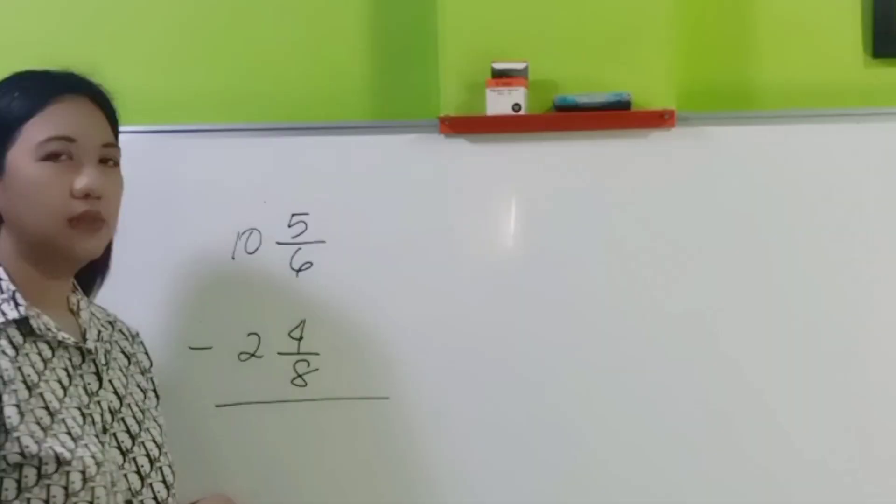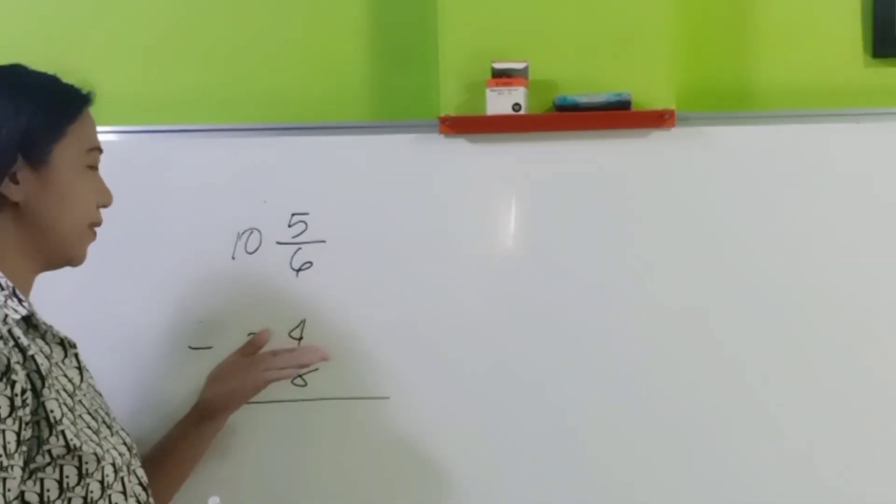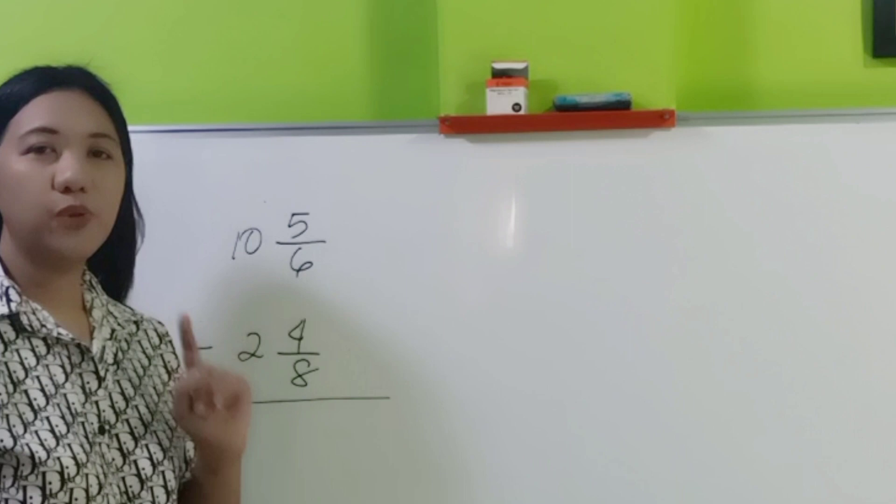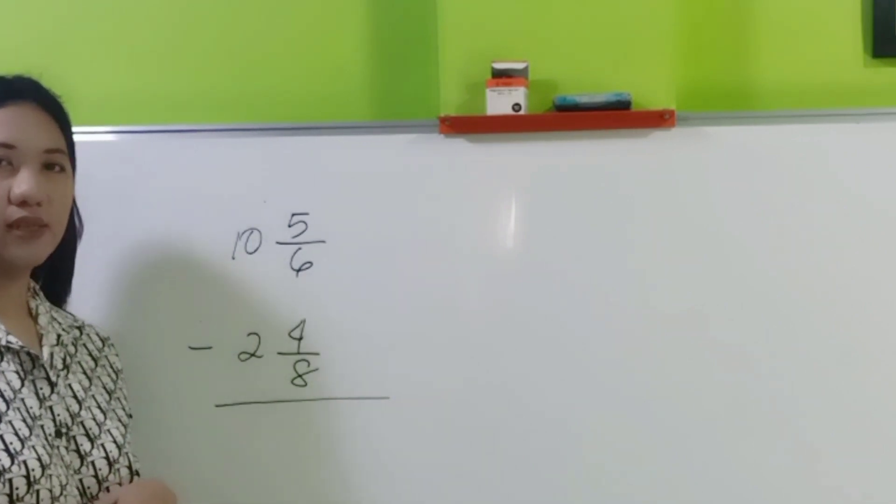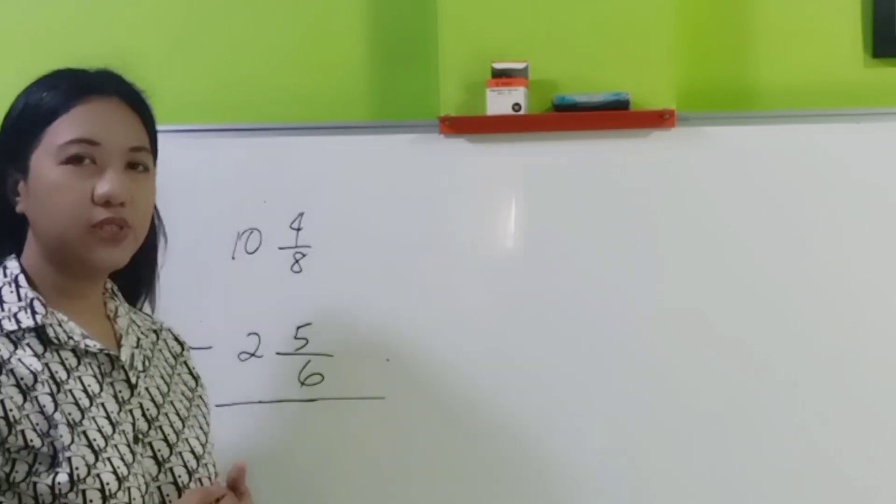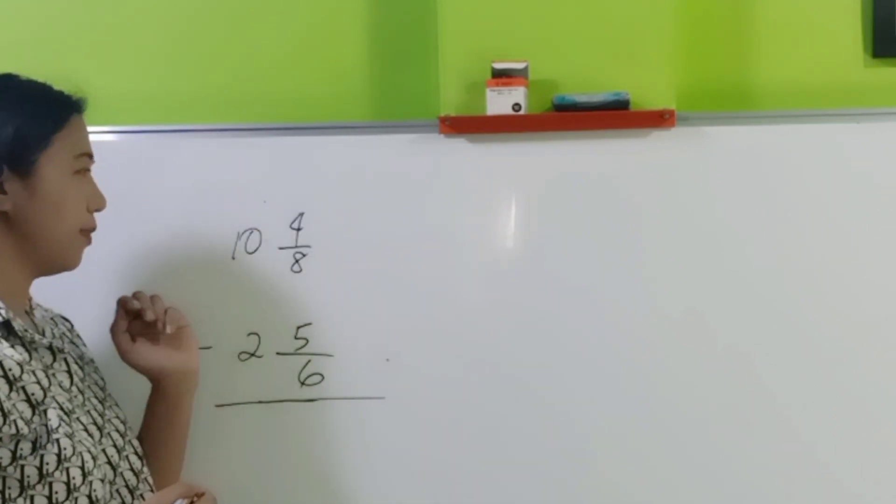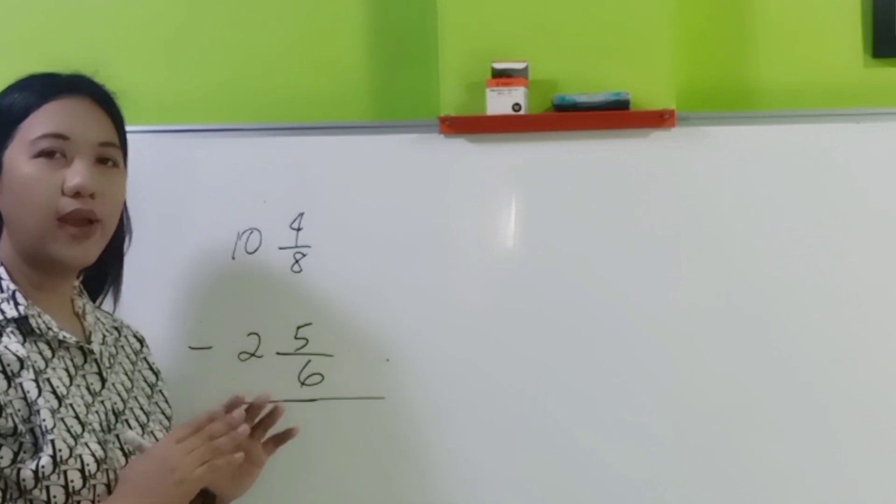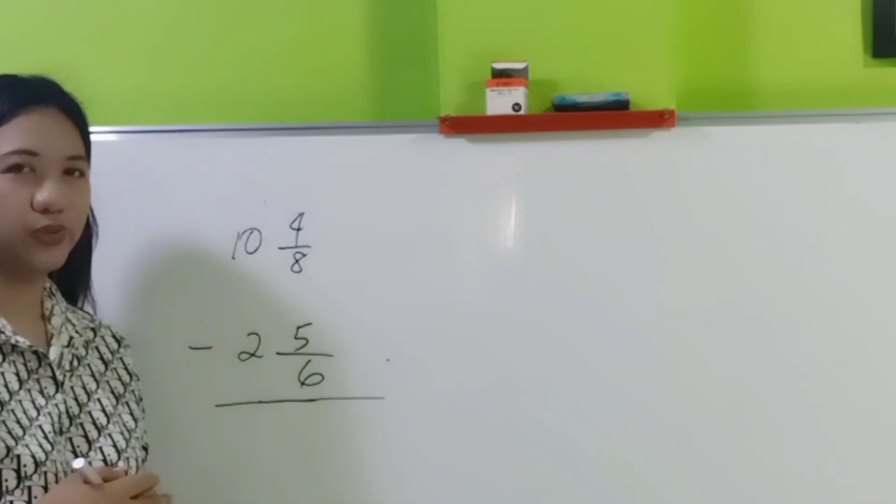Are you now ready for an exercise? Try to solve the exercise. Pause the video and compare your answers later on. Please try to do this. 10 and 5 sixths minus 2 and 4 eighths. Pause the video for a while and then come back for the solution later. Please try to do this. 10 and 4 eighths minus 2 and 5 sixths. Pause the video for a while and come back later for the solution.